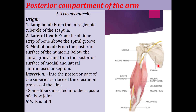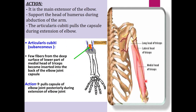To summarize the origins: the long head originates from the infraglenoid tubercle; the lateral head from the posterior surface of the humerus above the spiral groove; and the medial head — the smallest — from the posterior surface of the humerus below the spiral groove. Two heads originate from the humerus, one from the scapula. They are inserted over the posterior part of the superior surface of the olecranon process of the ulna or into the capsule of the elbow joint.